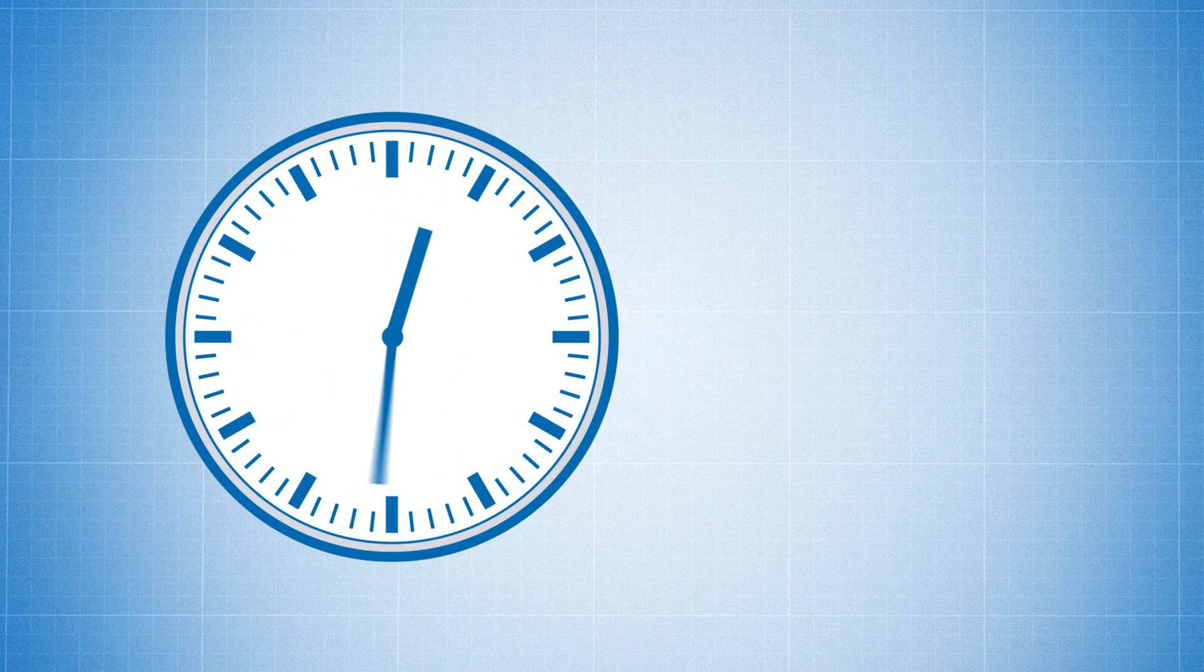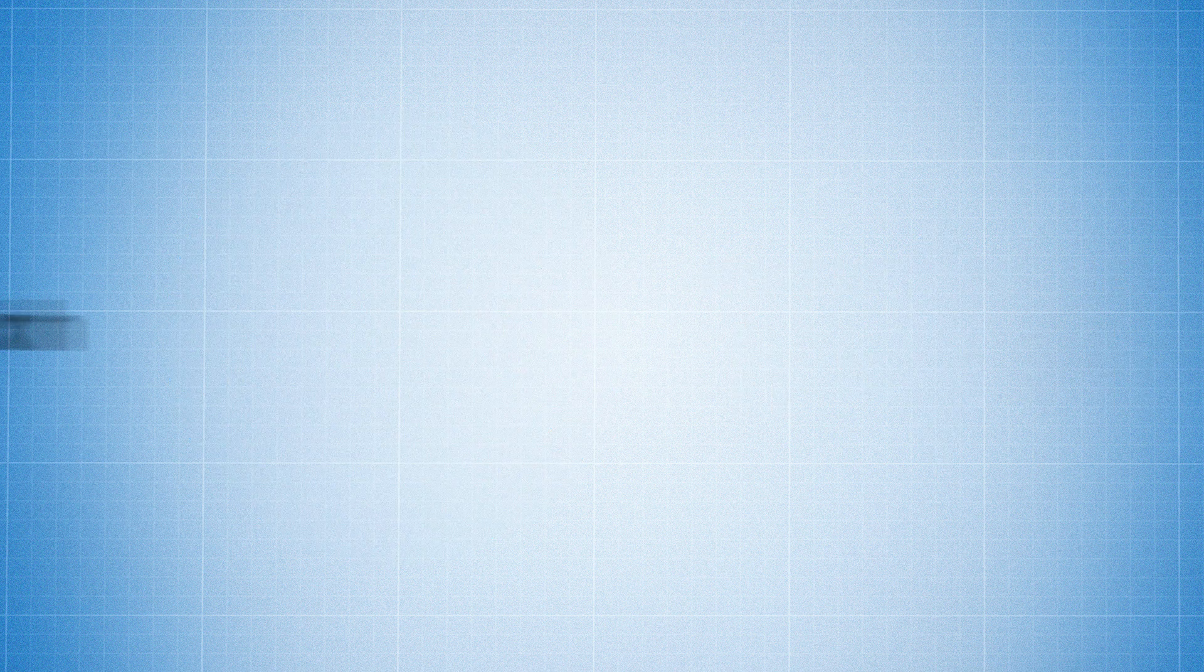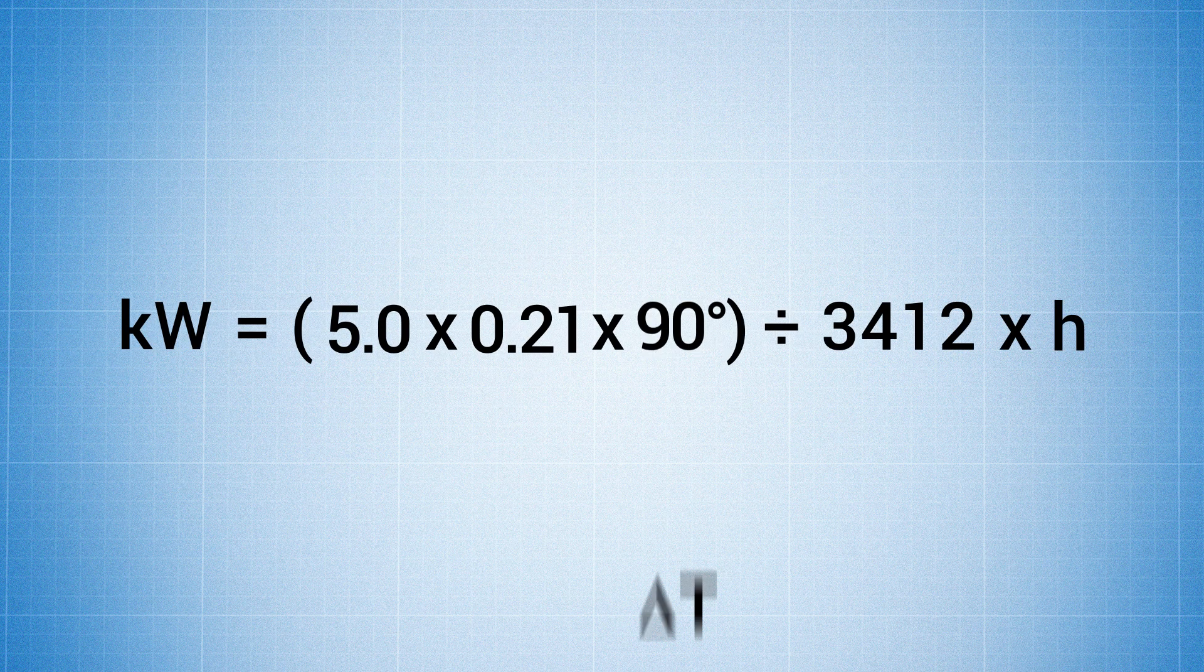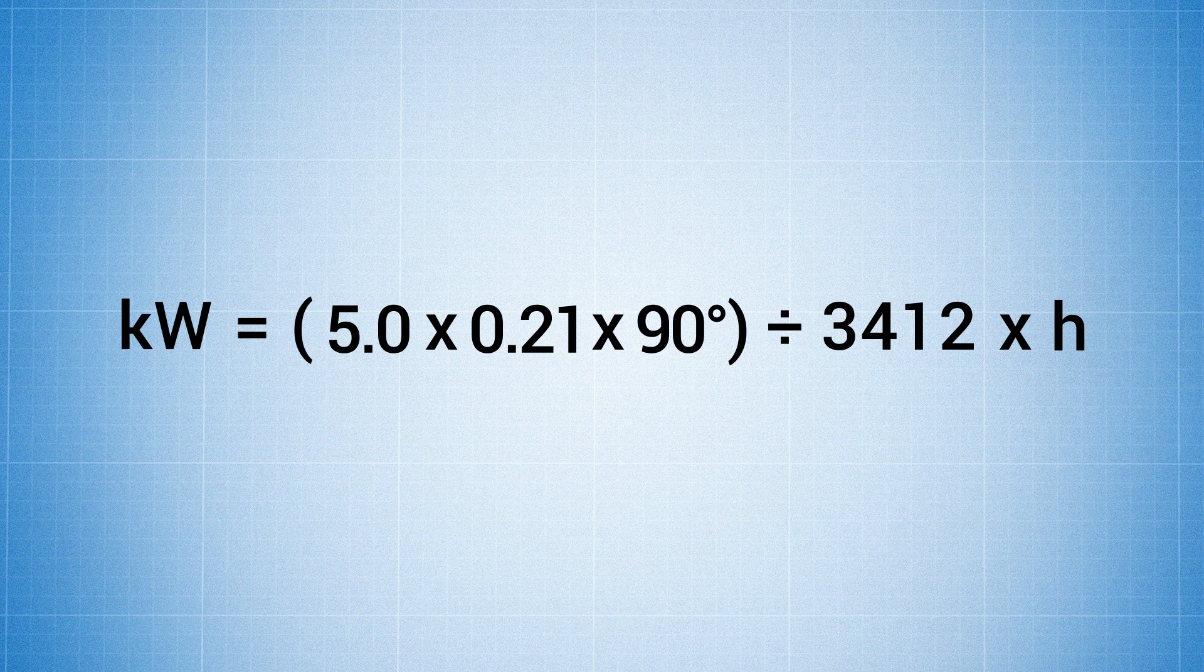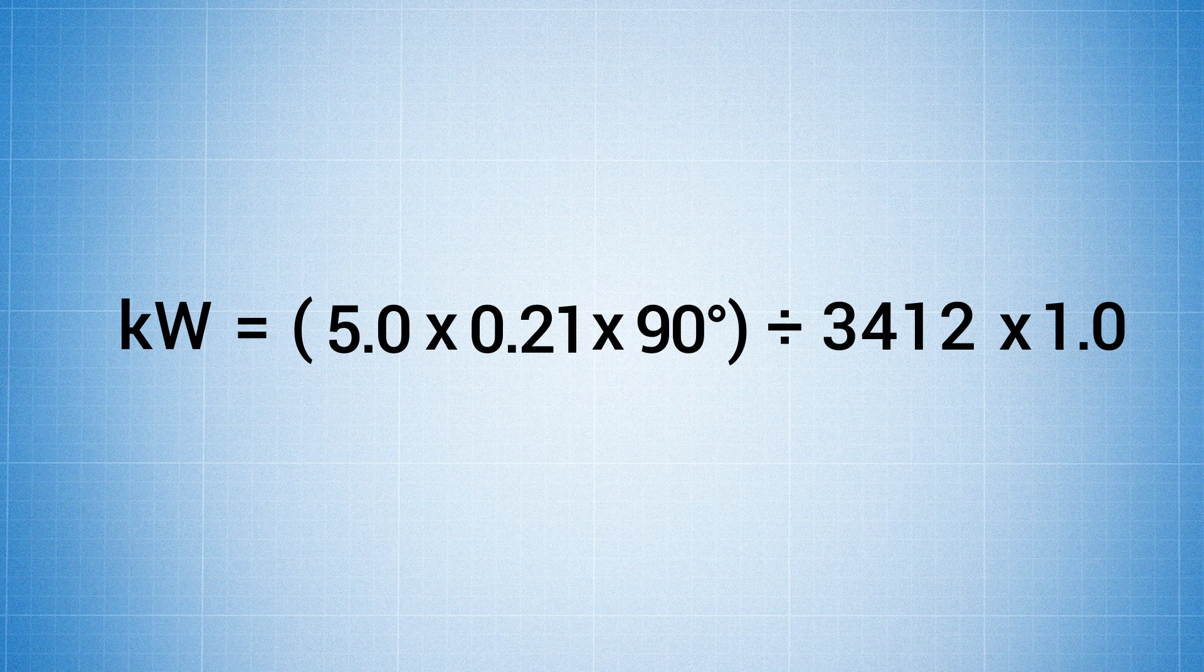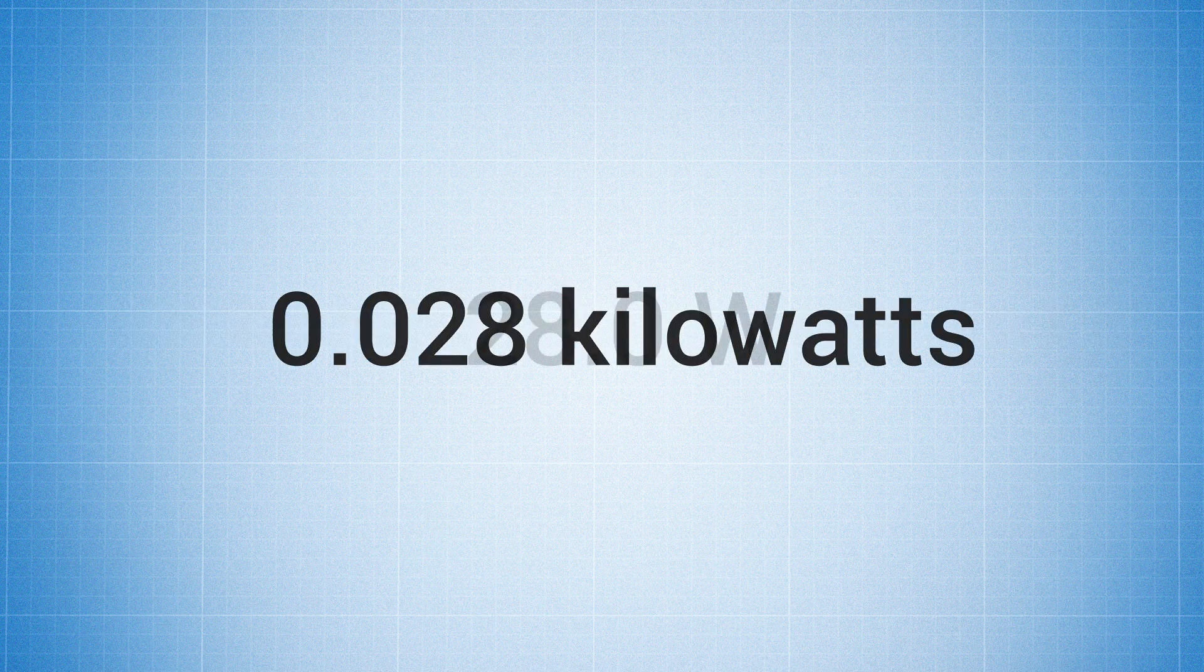And let's use one hour for the heat up time. So, we'll take 5 pounds times 0.21 BTUs per pound degree Fahrenheit times 90 degrees Fahrenheit divided by the conversion factor of 3412 times one hour heat up time, which will give you a total power of 0.028 kilowatts, or just 28 watts.